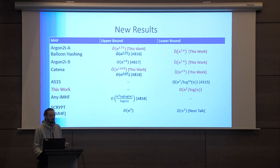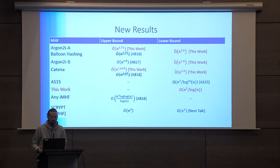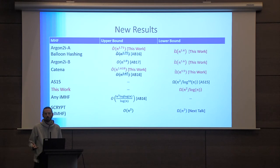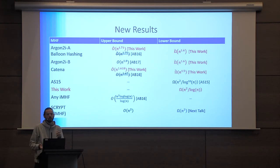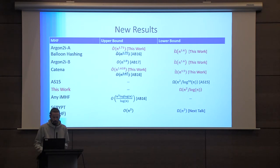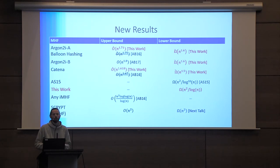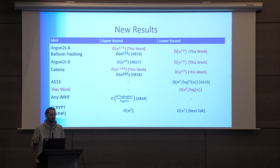In this work, we developed several new techniques for both attacks and new security proofs. In particular, we tightened the gap on what we know about certain functions — in particular Argon2i versions a and b, where the new version is Argon2i-b. Maybe the most interesting result in a theoretical sense is that we have an asymptotically almost optimal construction now — a graph that has as high CPC as you could hope for.